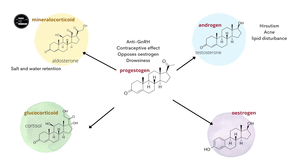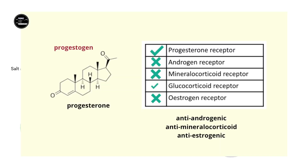Each hormone acts on its own steroid hormone receptor. So there is a progesterone receptor, estrogen receptors, androgen receptors, and so on. There is some cross activity between receptor types, which may be agonistic or antagonistic. For example, whilst the main action of progesterone is on the progesterone receptor, it also has a small amount of glucocorticoid activity, as well as anti-androgenic, anti-estrogenic, and anti-mineralocorticoid activity.